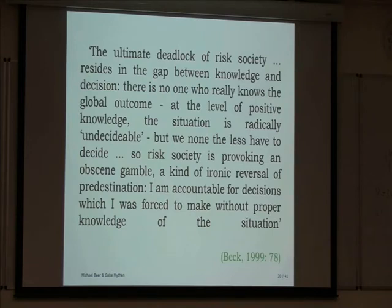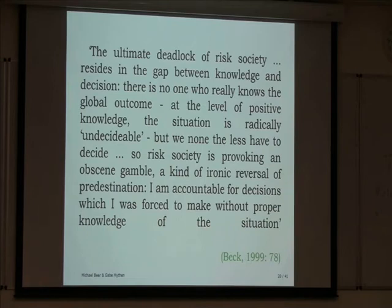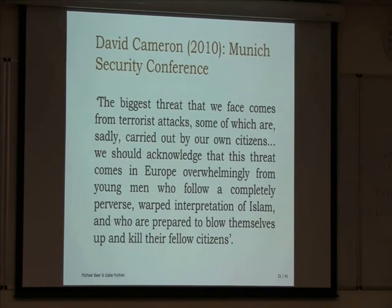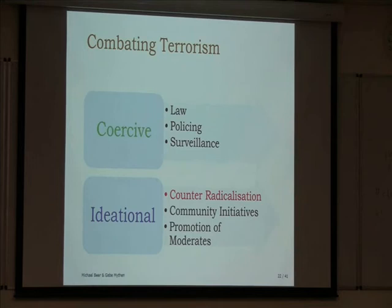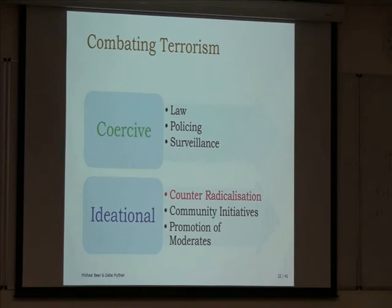Beck identifies a very real problem for risk regulators: when you have a bit of evidence, there's pressure to act, but not enough evidence on which to act. Do you wait and do nothing? Do you wait until evidence emerges? Do you go on previous information? Or do you act preemptively? The answer varies depending on which policy arena you're talking about. In the area of terrorism, a lot of the regulation — both coercive and ideational measures — has been based on policies of preemption: you intervene early because the risk manifesting as harm may be very grave further down the line.